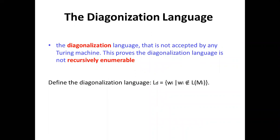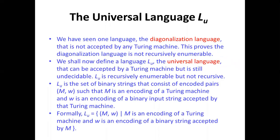Now we will learn about the diagonalization language. The diagonalization language L_D is not accepted by any Turing machine. This proves that the diagonalization language is not recursively enumerable. The definition of the diagonalization language is: L_D is the set of encodings W such that W is not accepted by the Turing machine whose encoding is W.